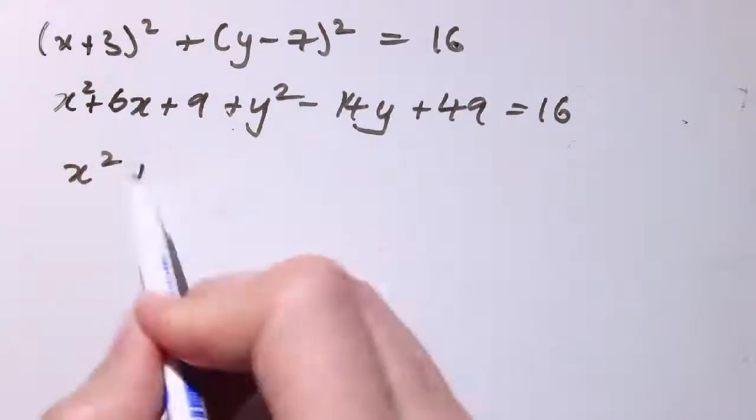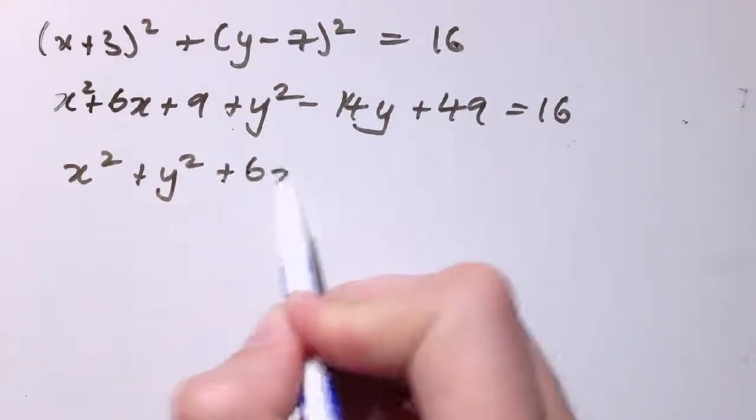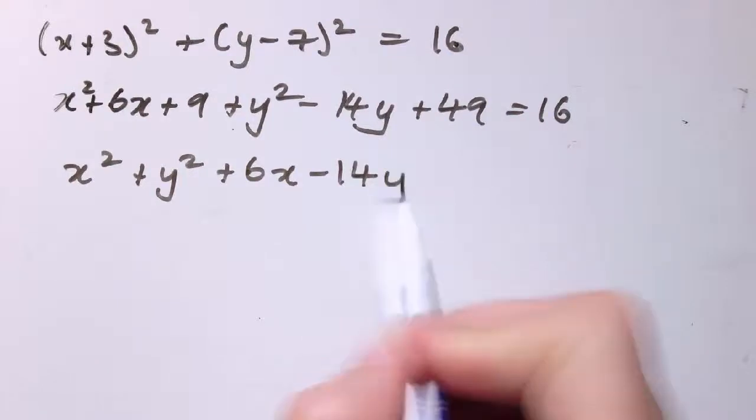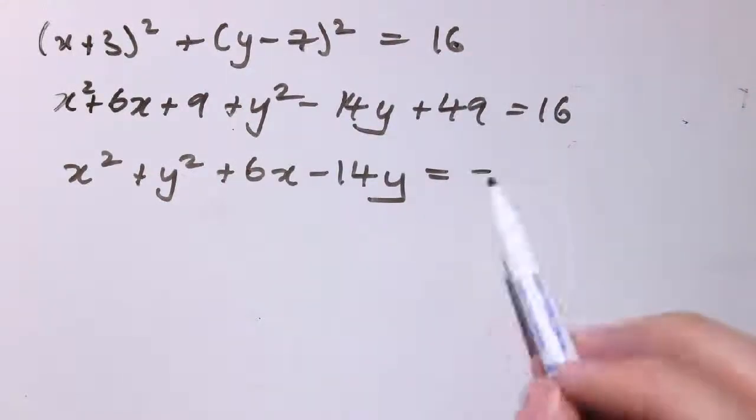So I could say this is x squared plus y squared plus 6x minus 14y equals 16 minus 9 minus 49 which is minus 42.